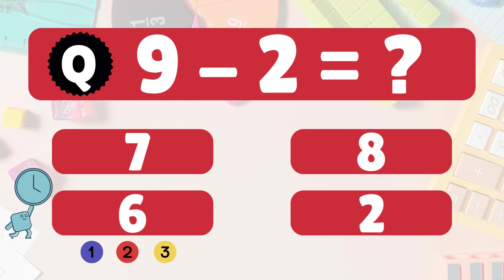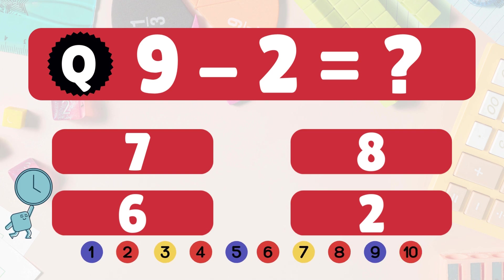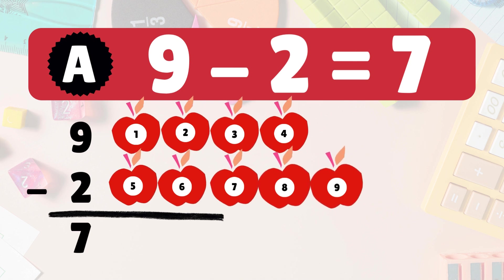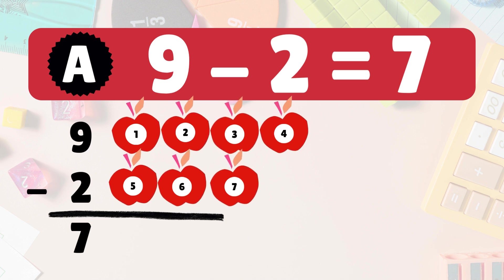Next: 9 minus 2 equals what? 9 minus 2 is 7. Here we have 9 apples. Take 2 away. 7 apples left: 1, 2, 3, 4, 5, 6, 7. So 9 minus 2 is 7. Woohoo!